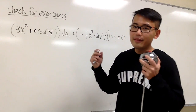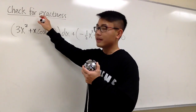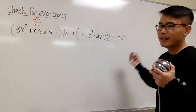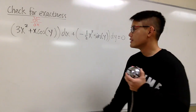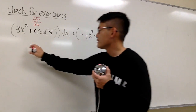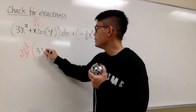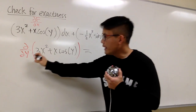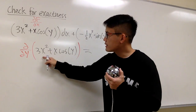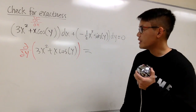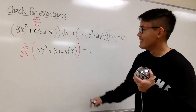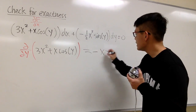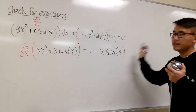This term is with dx, so hopefully there is a capital F such that this represents the partial of F with respect to x. To check if this is exact, I'll check the mixed partial by differentiating with respect to y. Let's put this down: 3x² + x·cos(y). In this situation, y is the variable and x is the constant. Therefore, 3x² is also a constant and differentiates to zero. For the second term, x is a constant we can pull out, and the derivative of cos(y) is negative sine, giving us −x·sin(y).